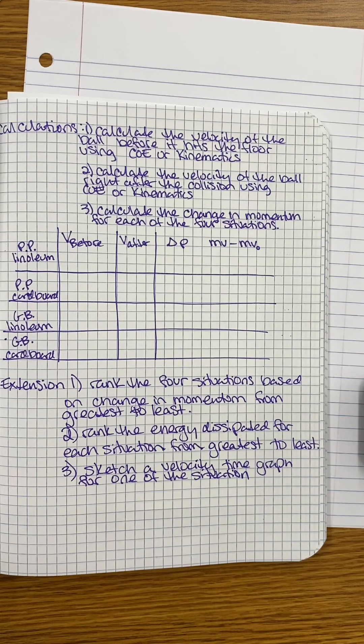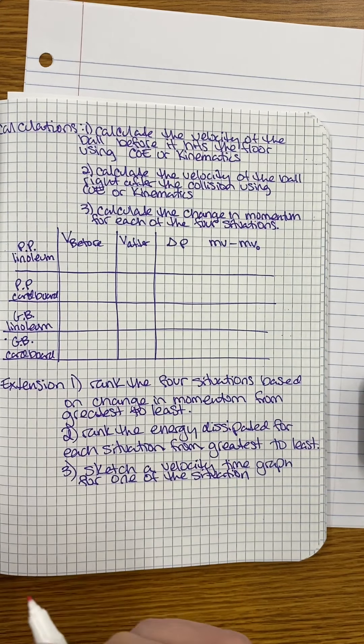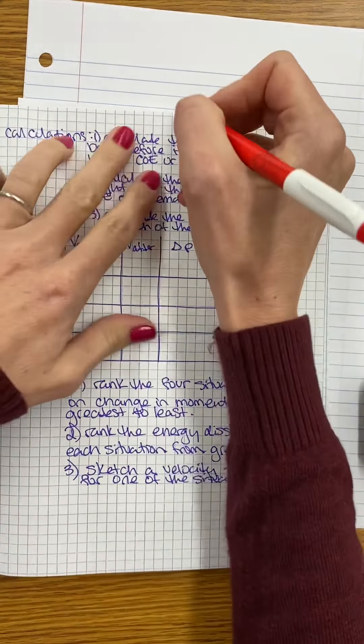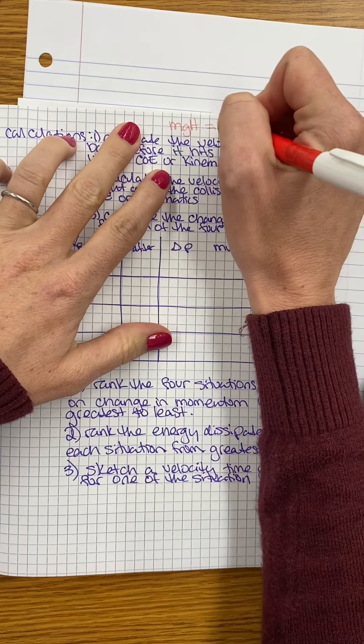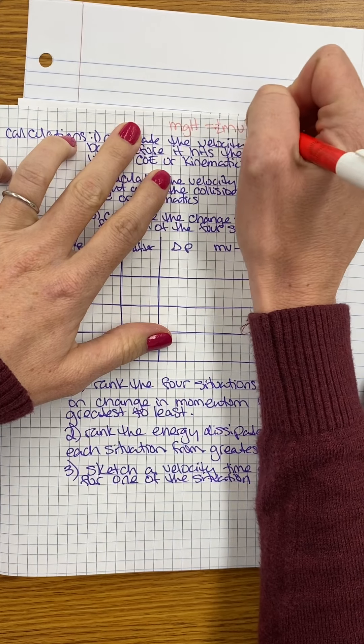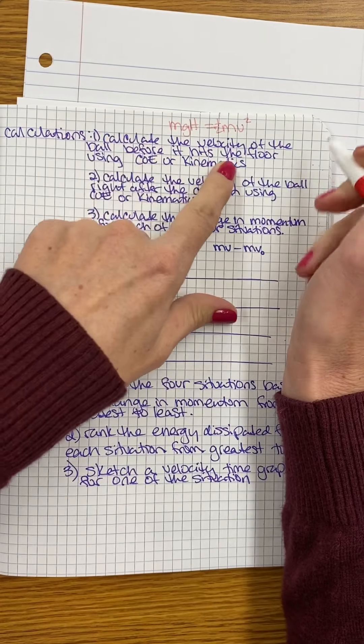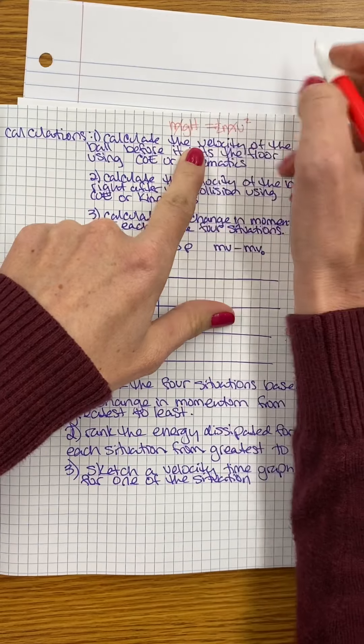With these velocities before the collision with the floor and the velocity after the collision with the floor, we can calculate the change in momentum. But we also need our mass for this. So when we set up our conservation of energy statement, our mass will end up canceling out, right? Because it starts with gravitational potential energy, and it goes to kinetic energy. When I rearrange my equation, my masses will cancel out.